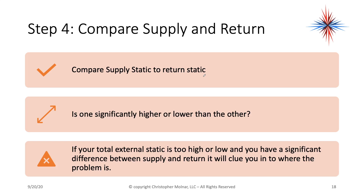Then we compare the supply and return individually. My return was 0.46 and my supply was 0.16. Is one significantly higher than the other? Yes, it is. My return static at 0.46 is significantly higher than the supply at 0.16. Then we can go and find out what part of our problem is — that's the side you want to concentrate on first.